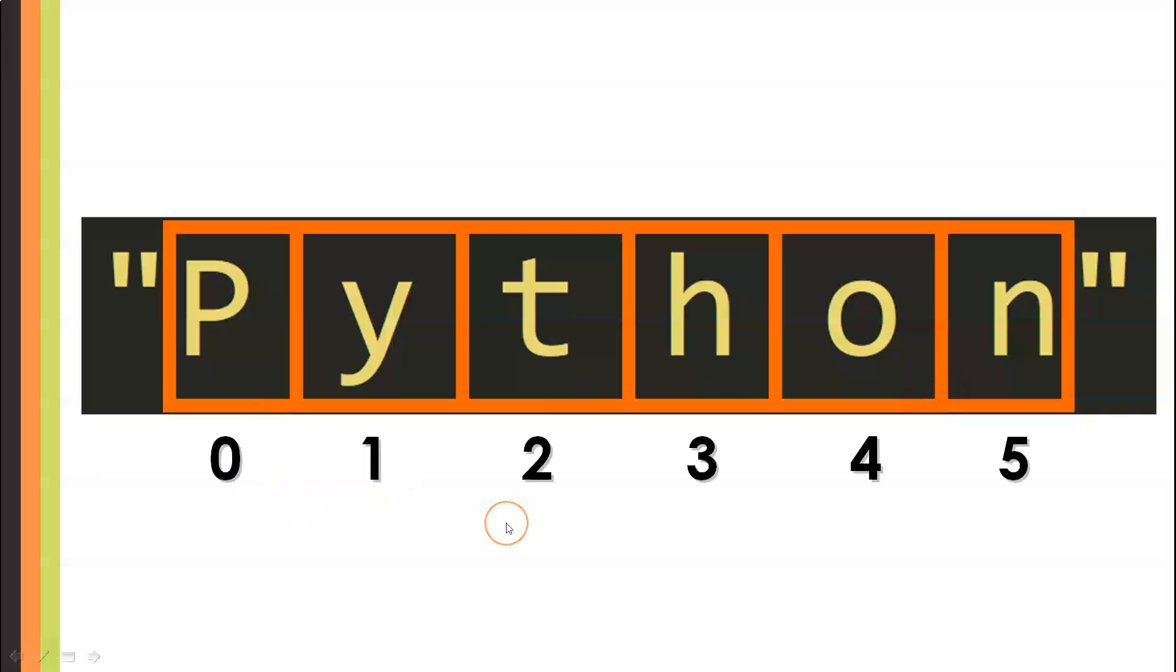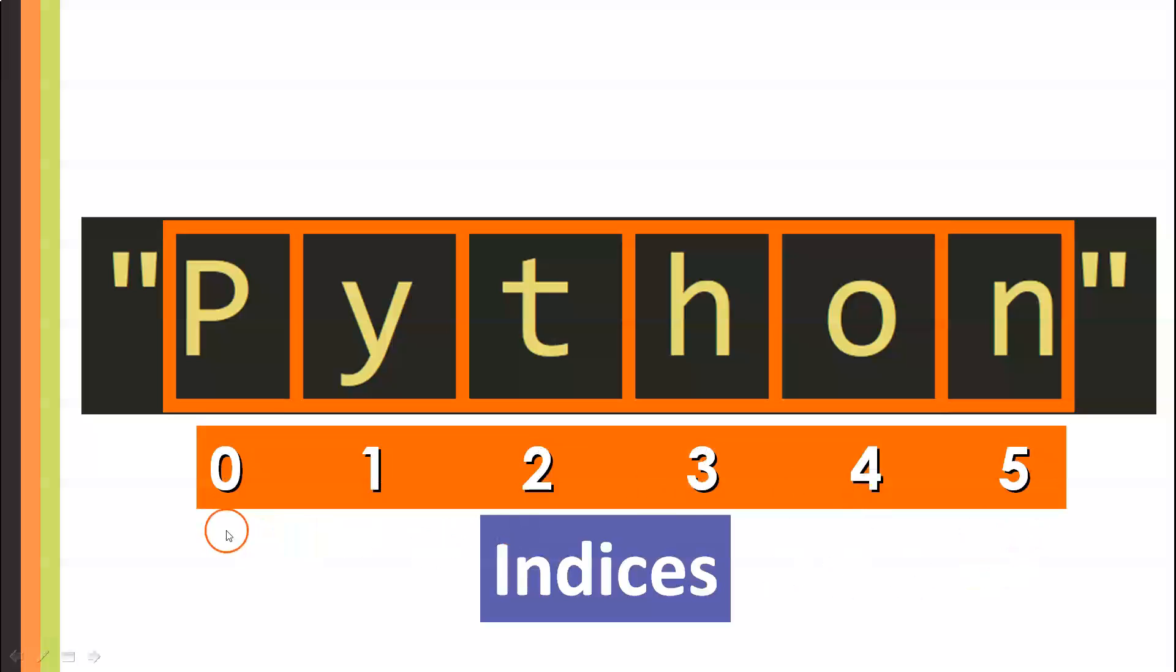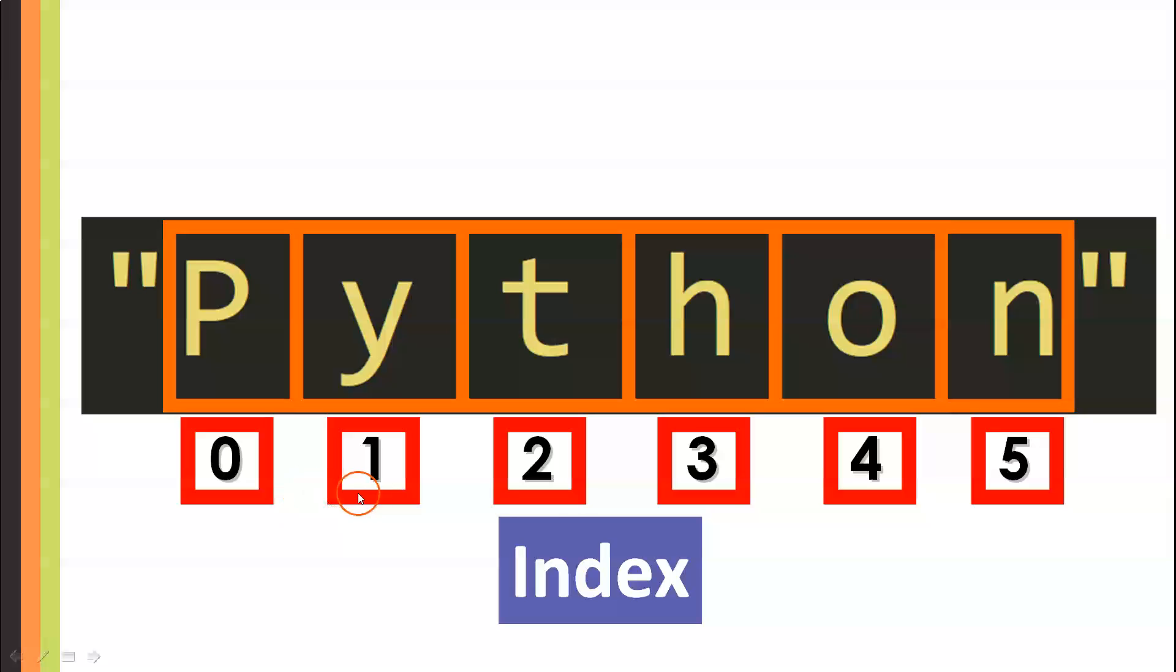And that location is marked by an integer, from 0 to 5 in this case, for the string Python. These numbers are collectively called indices, and each one of those numbers is called an index, so we can use them to access their corresponding character.